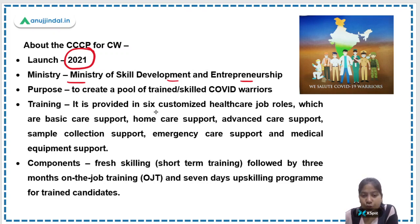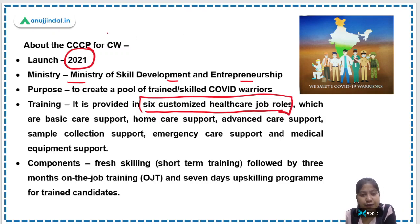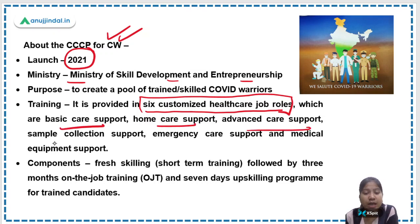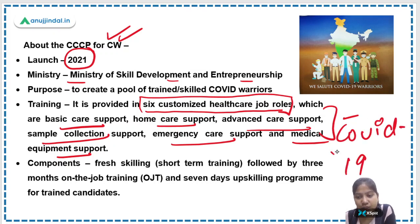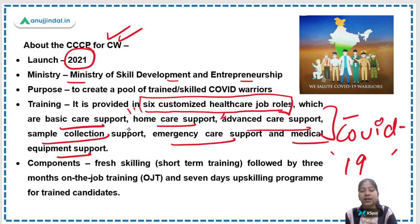Training is provided in six healthcare job roles: basic care support, home care support, advanced care support, sample collection support, emergency care support, and medical equipment support. All of these pertain to COVID-19. For example, where a patient is quarantined at home, COVID warriors need training in home care support.